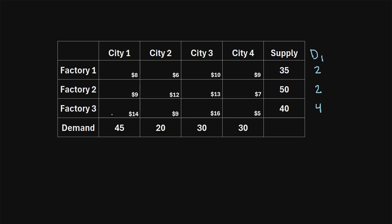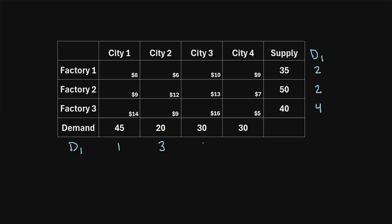We also calculate these differences across the columns. In the first column, the lowest shipping cost is eight dollars and the second lowest is nine dollars, so the difference is one. In the next column, the lowest is six dollars and the second lowest is nine dollars, so the difference is three. In the third column, the lowest is ten dollars and the next lowest is thirteen, so the difference is three. In the last column, the lowest is five dollars and the second lowest is seven dollars, giving a difference of two.